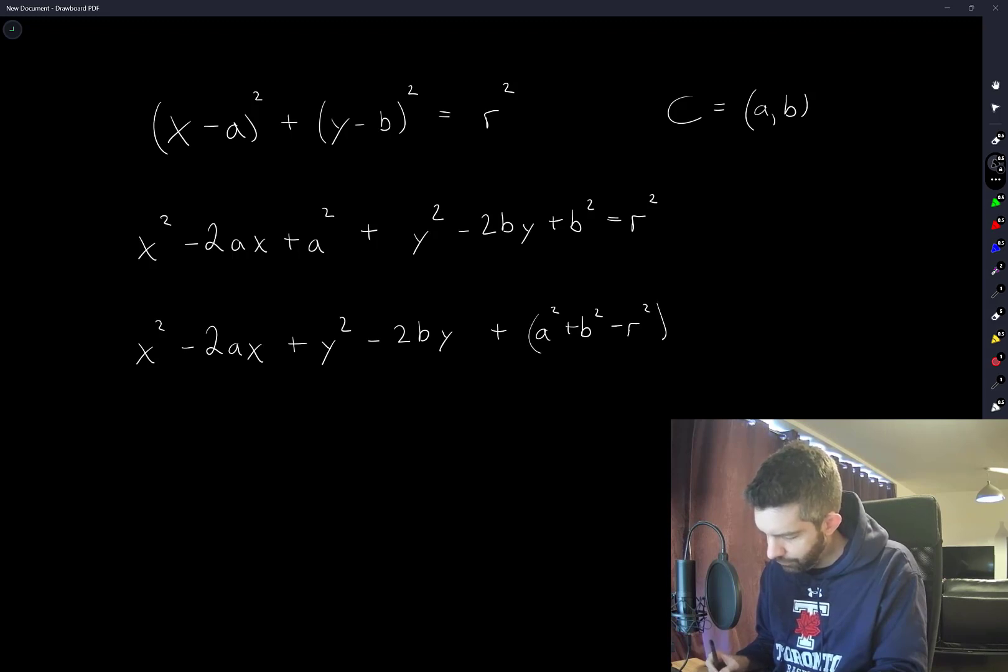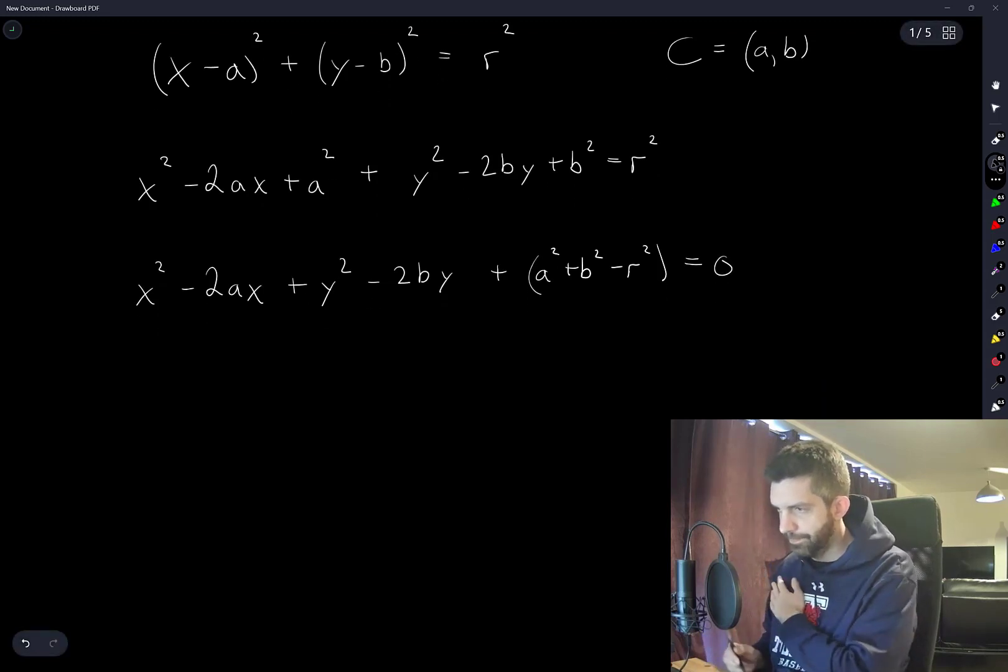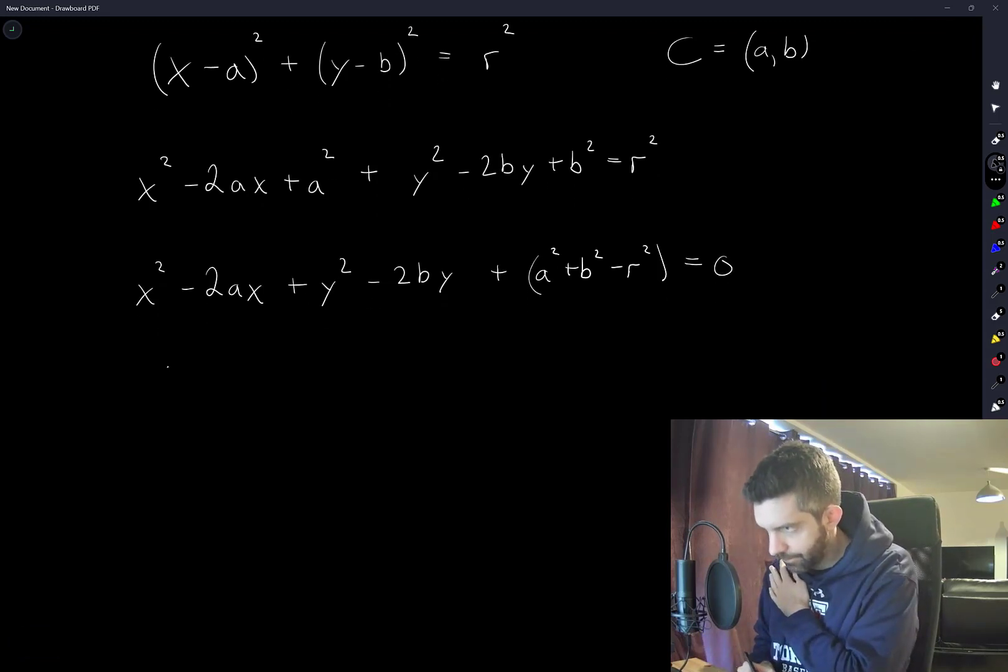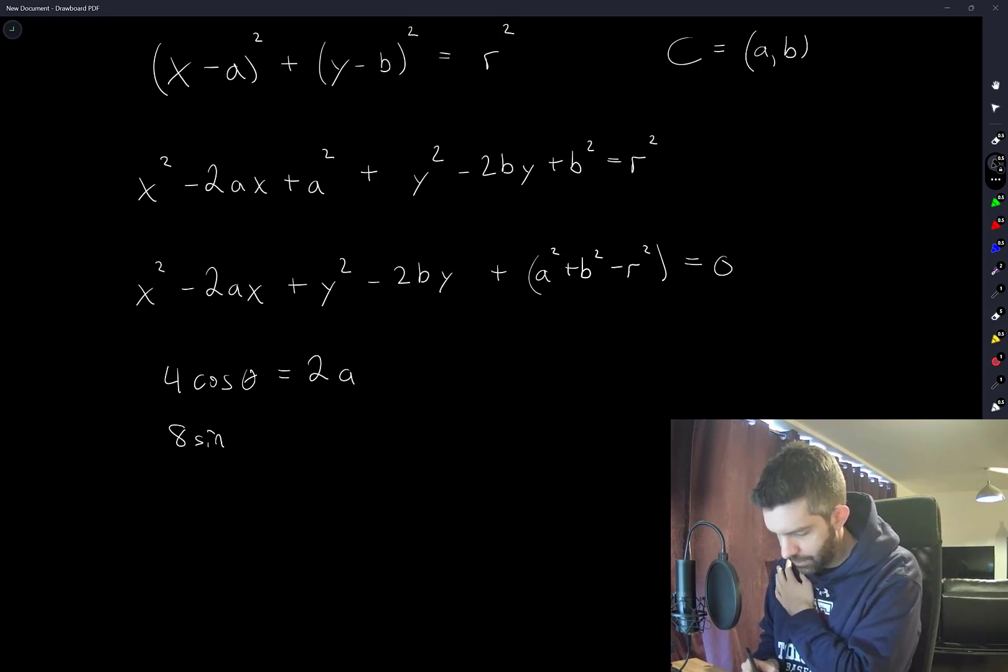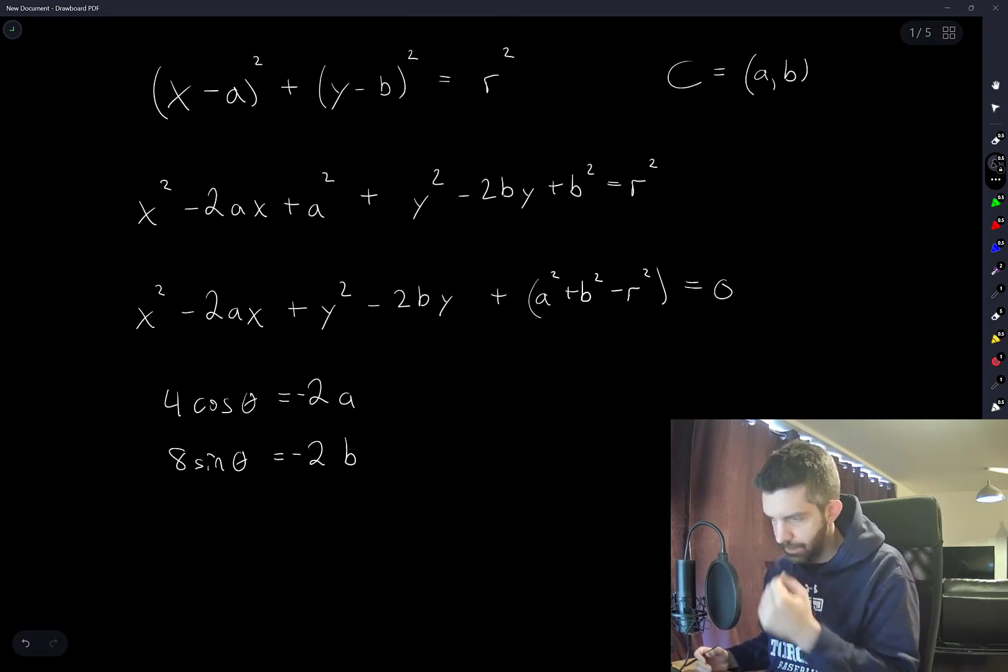And now I can read off from the original expression that I need 4 cos(θ) to be equal to -2a. And I need 8 sin(θ) to be equal to -2b, I suppose negative signs, right? That's fine. A and b are arbitrary real numbers.